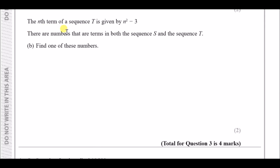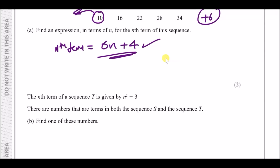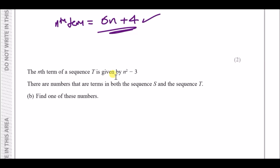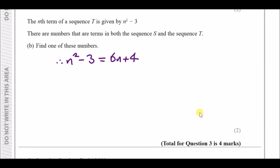Part B: the nth term of sequence T is n² − 3. There are numbers that are terms in both sequences S and T — find one of these numbers. For both sequences to share a term, their nth term expressions must be equal at some value of n. So we set n² − 3 = 6n + 4. Rearranging by moving all terms to the left gives n² − 6n − 7 = 0.